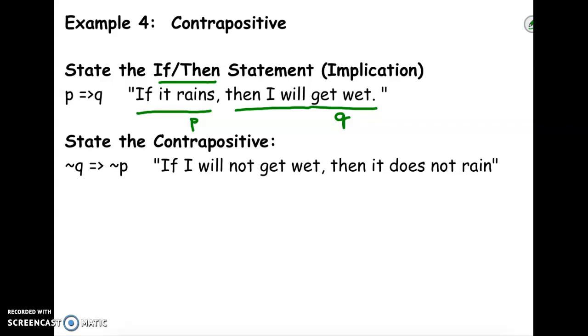To create the contrapositive, remember we're changing the order of the propositions and then negating them. So now we negate and change the order. So how we write this is, if I will not get wet, then it does not rain.